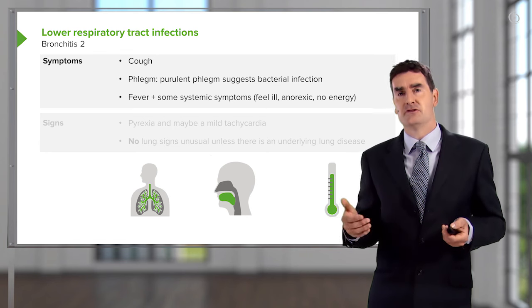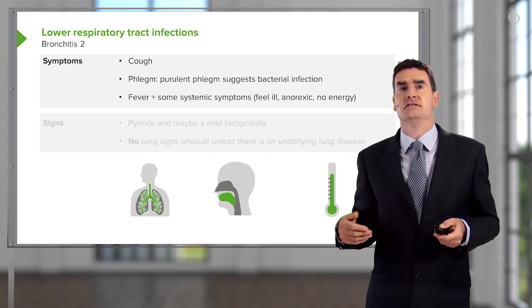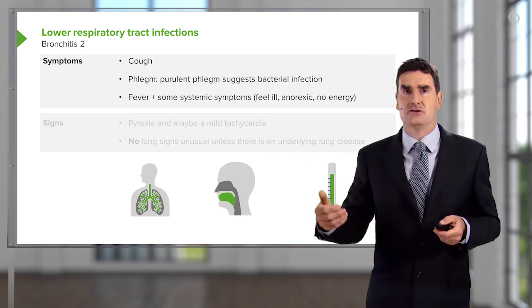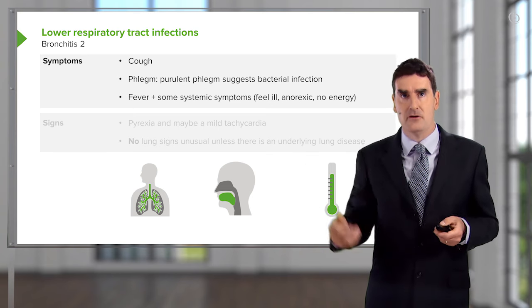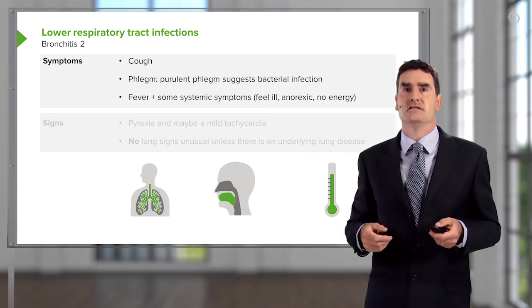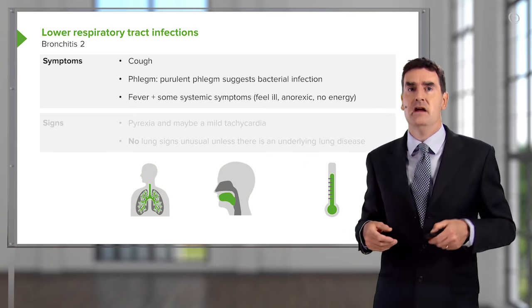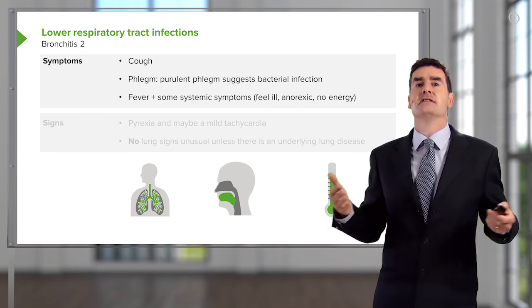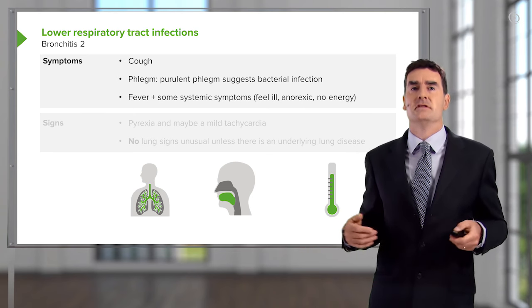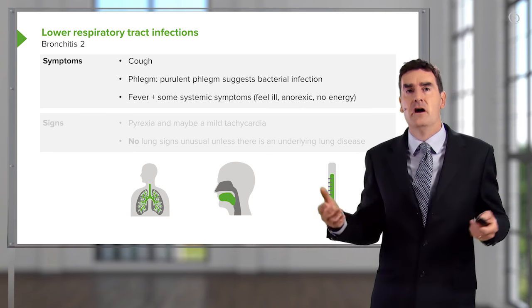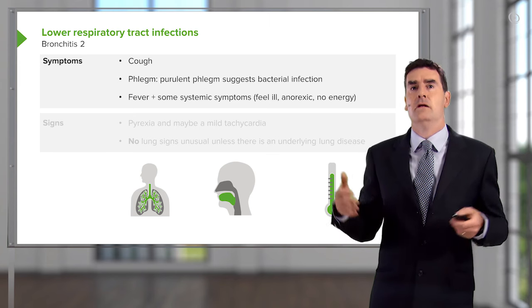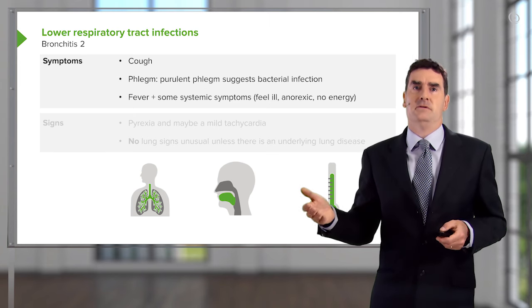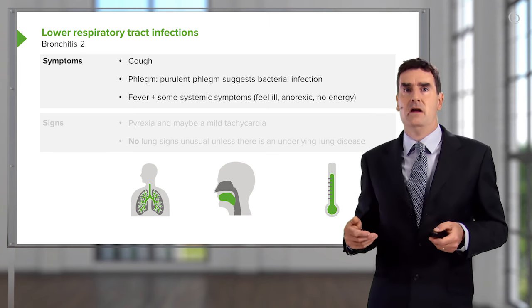The symptoms of tracheobronchitis include cough and phlegm production. Purulent phlegm tends to suggest a bacterial infection. As it's an infection, you also get systemic symptoms — fever, feeling unwell, and typically going to bed for a couple of days or so.